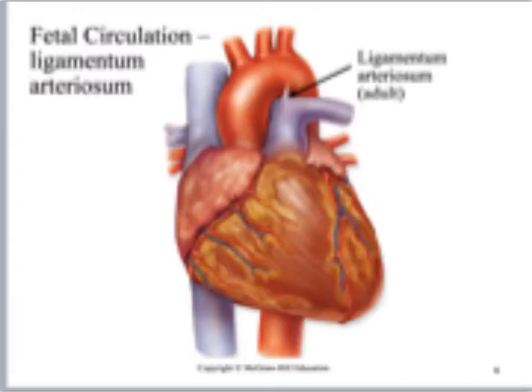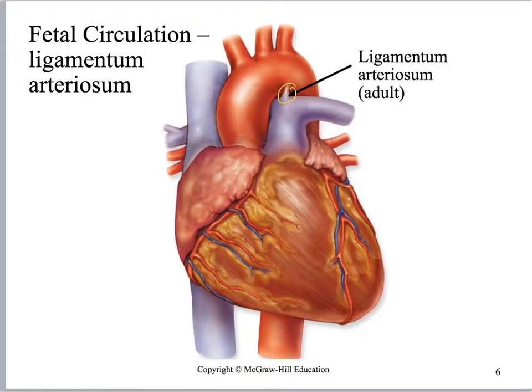Looking at what you would see in an adult model, you see the ligamentum arteriosum, which is basically a little bit of scar tissue.